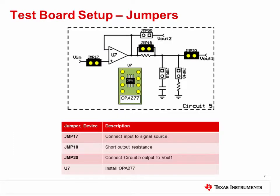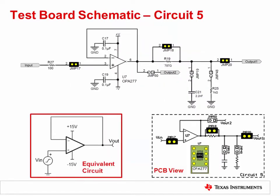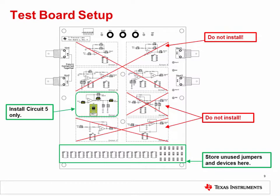To prepare the test board for the measurement, install the jumpers and devices on circuit 5 as shown. Install JMP17, JMP18, and JMP20, as well as the OPA277 in socket U7. This slide shows the full schematic for circuit 5 on the TI Precision Labs test board, which you will use to measure the effect of slew rate limitations on the OPA277. For the test board to function properly, only install jumpers and devices in circuit 5. Do not install any jumpers or devices in any other circuits on the PCB. Remove any jumpers or devices from the unused circuits and store them in the storage area at the bottom of the test board.